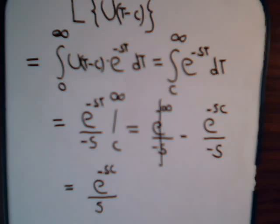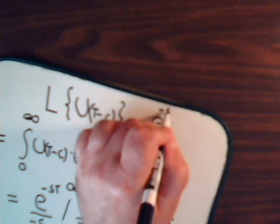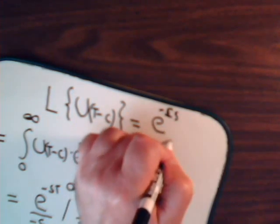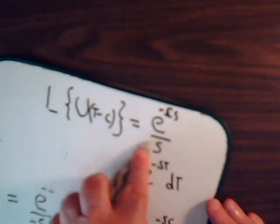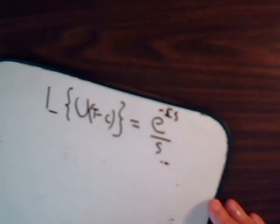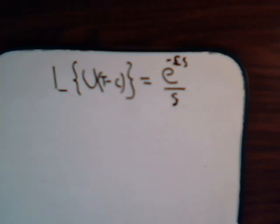So the Laplace transform of the step function exists and it was pretty easy to determine. We could determine that pretty quickly just by using the definition of the Laplace transform. So that's it: e to the minus cs divided by s. Pretty straightforward.